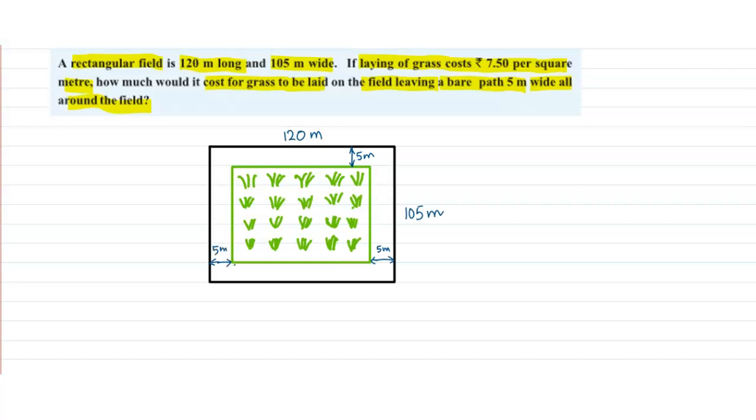So that means in order to get this path, we need to subtract 10 from 120 and we get 110 meters.